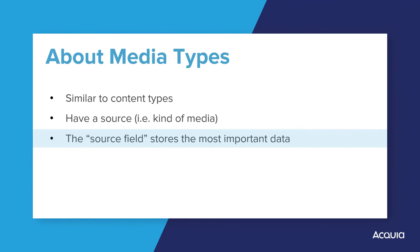The purpose of the source field is to store the single most important thing there is to know about any given piece of media. For example, if you have a YouTube video, the most important detail is the YouTube URL to the video. Without the URL, the video cannot be displayed, so the source field will be a text field in which you put a URL. With an image, the image file is the most important thing, so you get an image file field as your source field. The type of form element the source field takes varies depending on the sort of media we're dealing with.